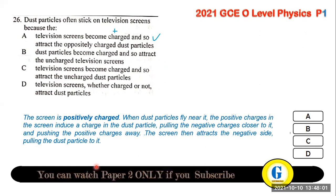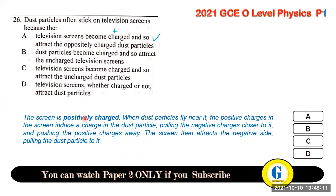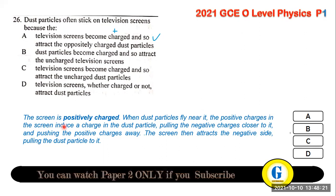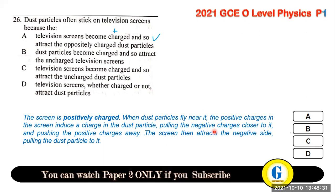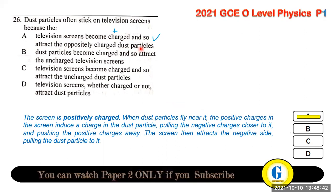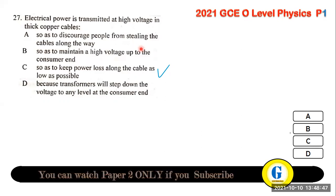Question 26: dust particles stick on television screens because the screen becomes positively charged. The positive charges induce a charge on the dust particles, pulling negative charges closer and pushing positive charges away. The screen then attracts the negative side of the dust particle to itself.